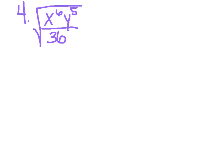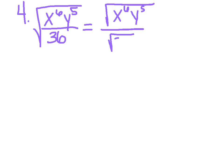Alright, don't quit on me now — I've got a few more different types of examples. Number 4: the square root of x to the 6th times y to the 5th, all over 36. Remember from dividing radicals, we can really rewrite this as the square root of x to the 6th times y to the 5th, divided by the square root of 36.